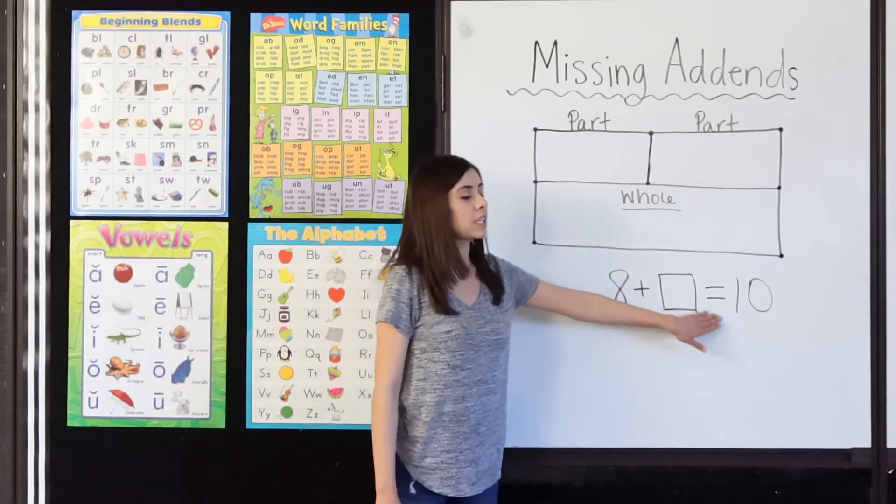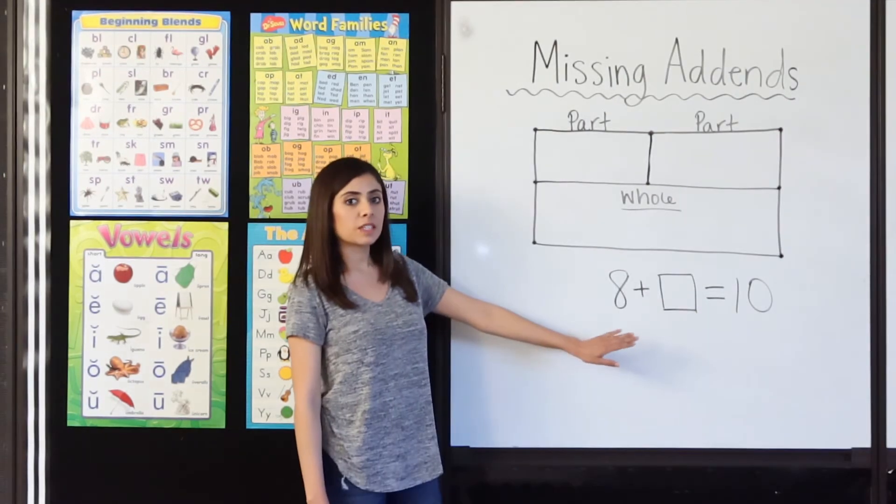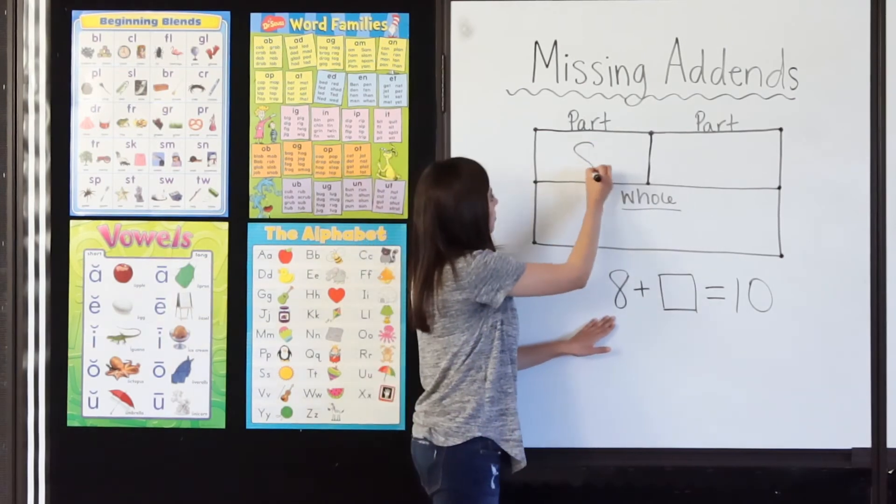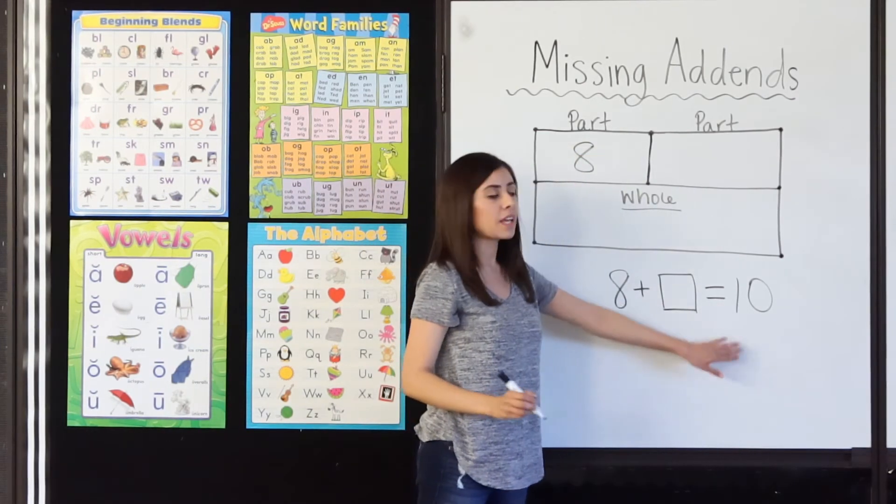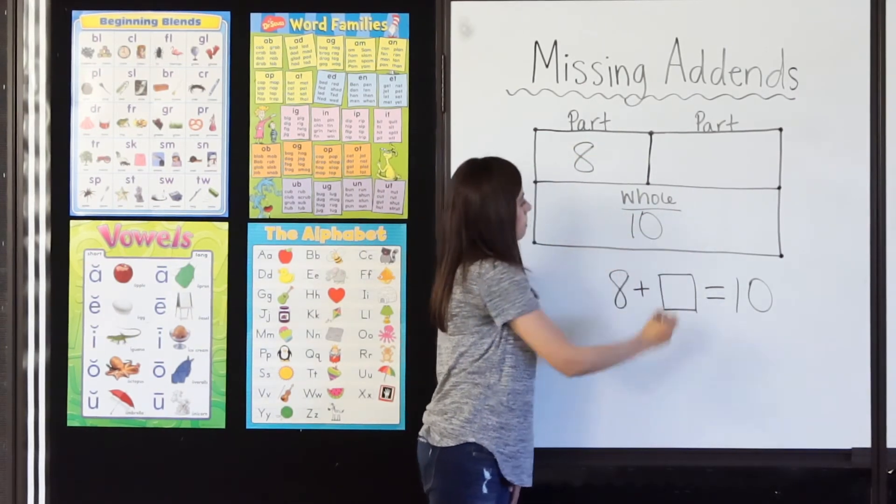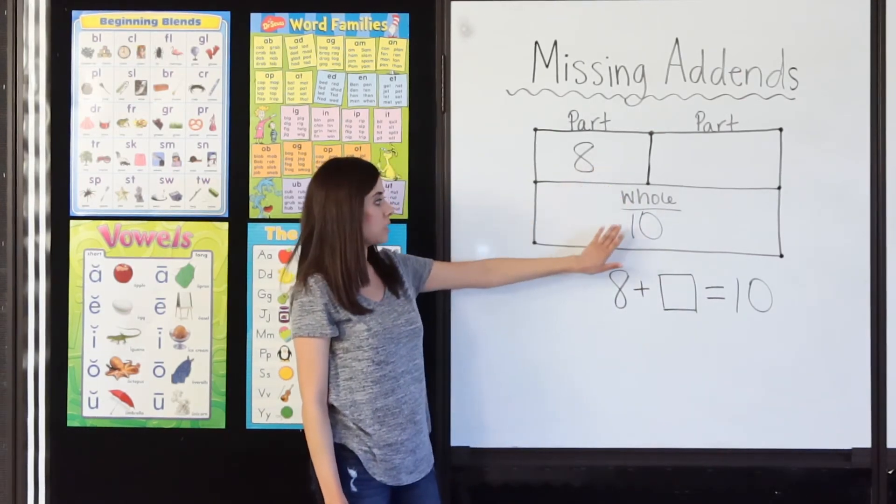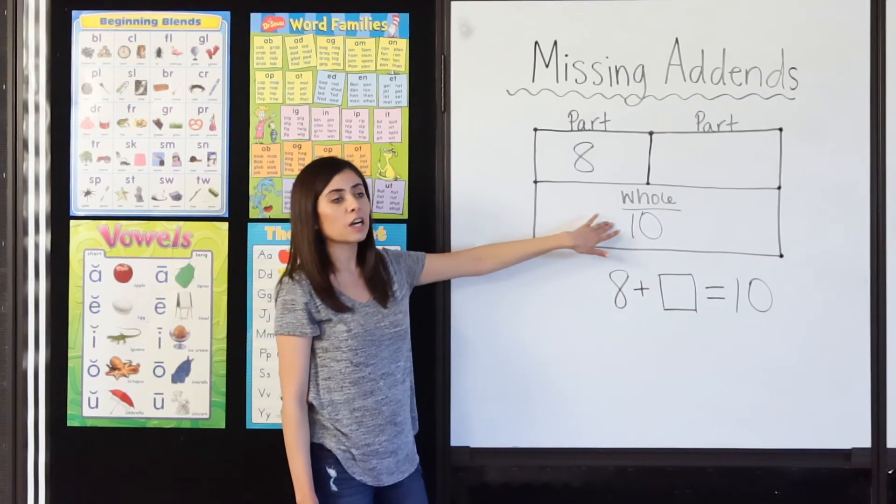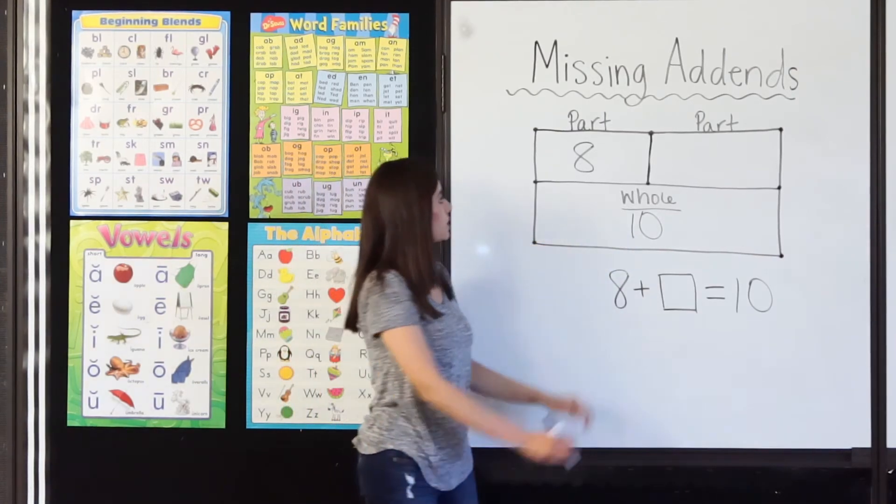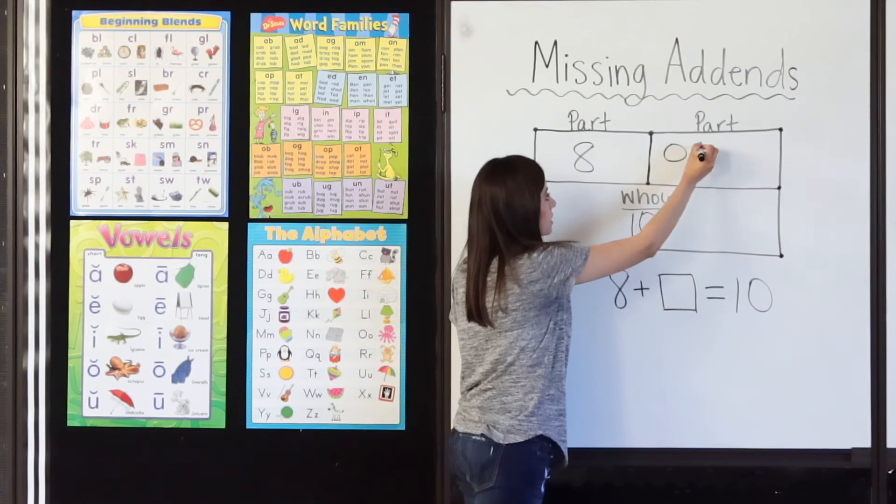I apologize for my squeaky marker today. 8 plus hmm equals 10. I will fill in my first part, 8, and my whole, 10. Let's go ahead and start at 8 and count up until we get to 10. I will use circles to help me keep track. 8, 9, 10.